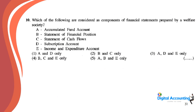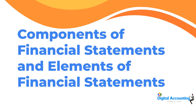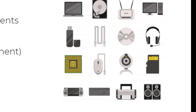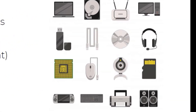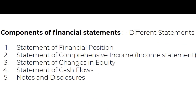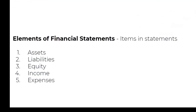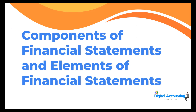Let's start the class with question number 10. The question asks which of the following are considered as components of financial statements prepared by a welfare society. Students often get confused between components of financial statements and elements of financial statements. Components of financial statements are the different statements themselves, while elements of financial statements refer to the items within those statements.